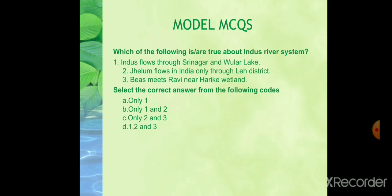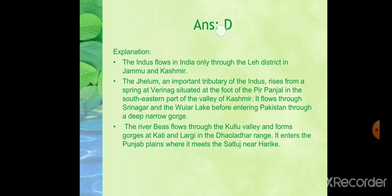Question 2: Which of the following statements is true about the Indus river system? Statement 1: Indus flows through Srinagar and Wular Lake. Statement 2: Jhelum flows in India only through Leh District. Statement 3: The river Beas flows through Kullu Valley and forms a gorge at Kati and Largi in the Dhauladhar range. The answer is D — all three statements are correct. The Indus flows in India only through Leh District in Jammu and Kashmir. The Jhelum flows through Srinagar and Wular Lake before entering Pakistan through a deep narrow gorge. The Beas flows through Kullu Valley and enters the Punjab plains where it meets the Sutlej near Harike.